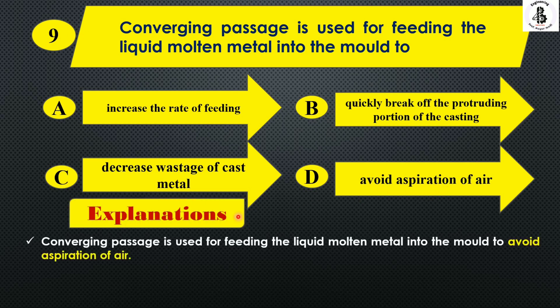A converging passage is used for feeding liquid molten metal into the mold to avoid aspiration of air. The right answer is Option D.